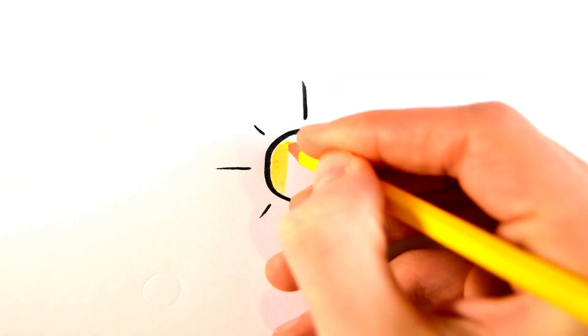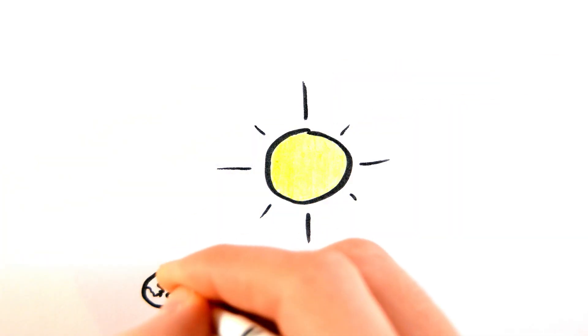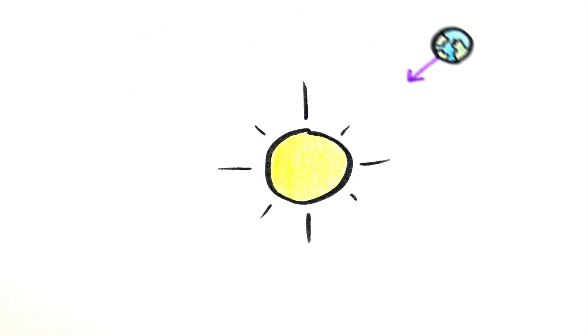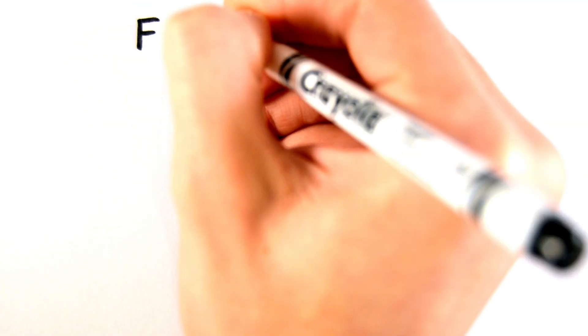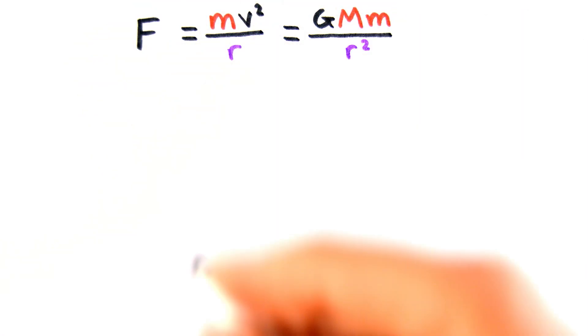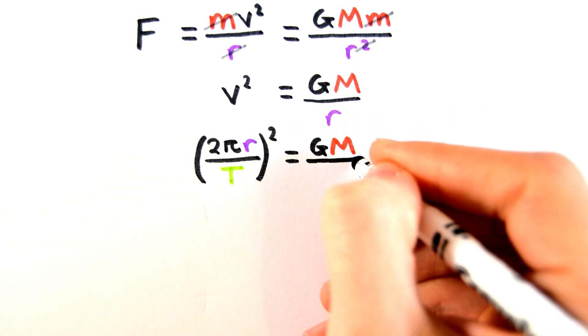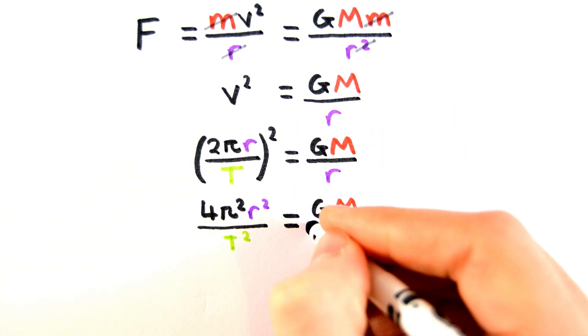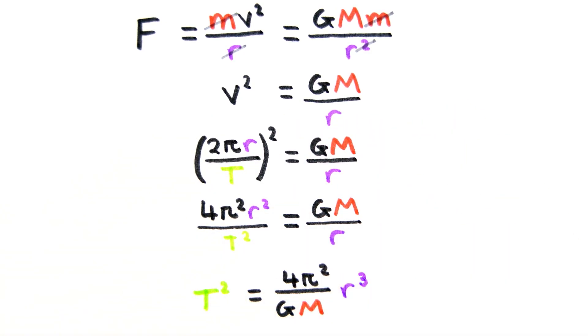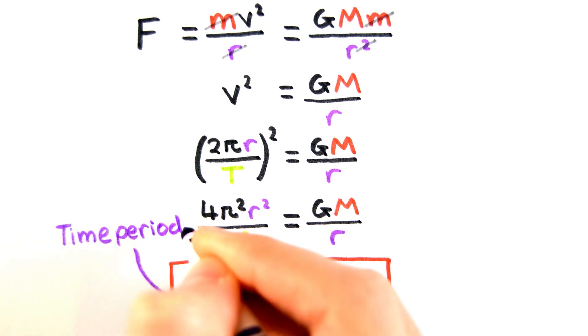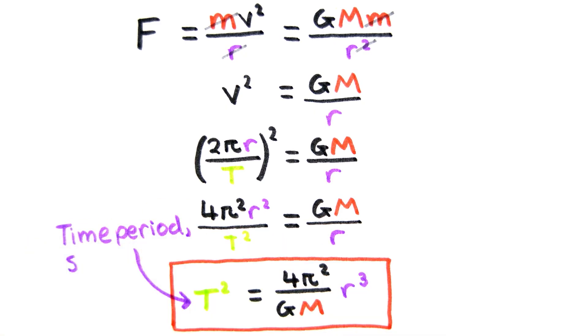When considering planetary motion, the gravitational force acting on the body provides the centripetal force. By equating the two formulas and using the formula for the speed of an object in circular motion, we get the equation T squared equals 4π squared over GM r cubed, where T is the orbital period in seconds.